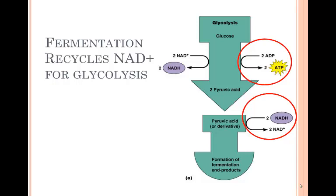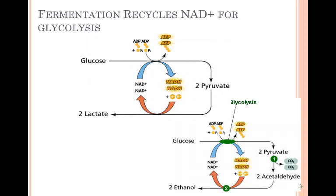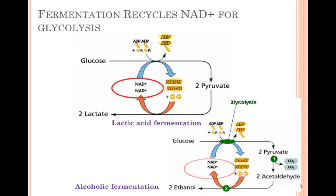During fermentation, the pyruvates produced during glycolysis are converted by enzymes to either lactic acid or into carbon dioxide and ethanol, depending on which enzymes the cell possesses. Simultaneously, NADH will be oxidized or changed back into the NAD+ form. You might recall that NAD+ is very important to the redox reaction in glycolysis that we discussed at length.